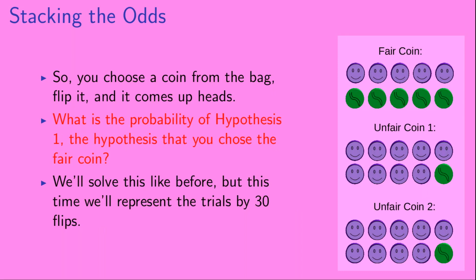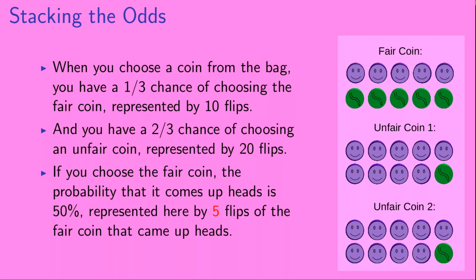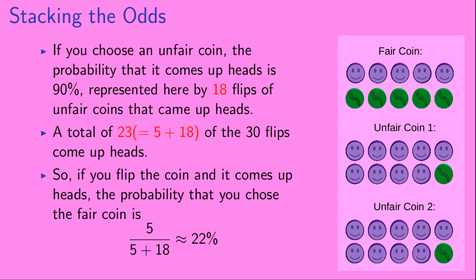We're going to ask: what is the probability of hypothesis 1, that you chose the fair coin? We'll solve this like before, but this time we'll represent the trials by 30 flips. When you choose a coin from the bag, you have a one-third chance of choosing the fair coin, represented by 10 flips, and a two-thirds chance of choosing an unfair coin, represented by 20 flips. If you choose the fair coin, the probability it comes up heads is 50%, represented by 5 flips. If you choose an unfair coin, the probability it comes up heads is 90%, represented by 18 flips. So a total of 23 — that's 5 plus 18 — of the 30 flips come up heads.